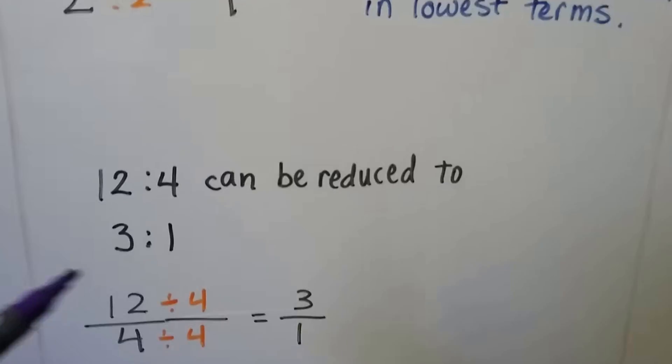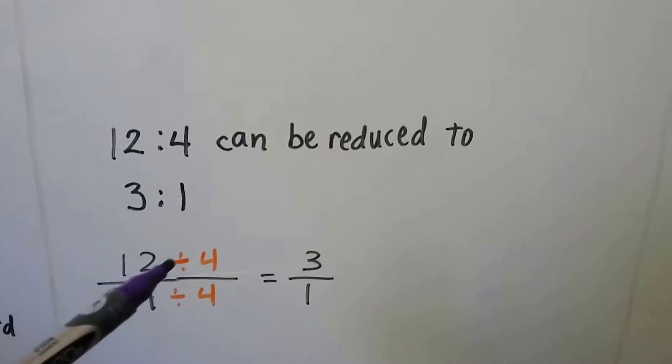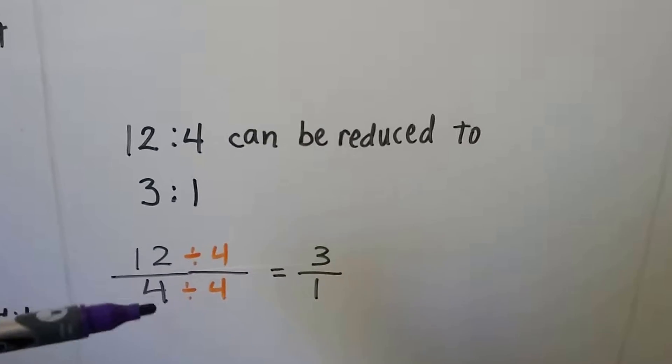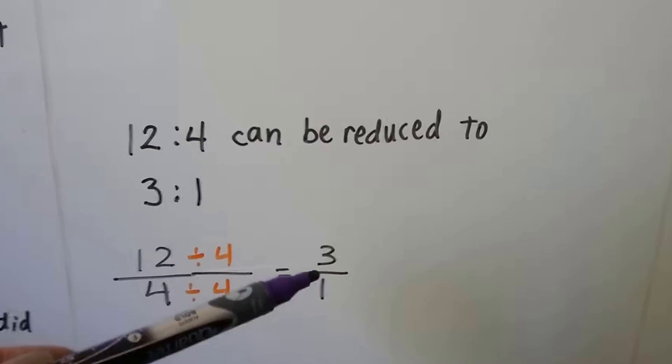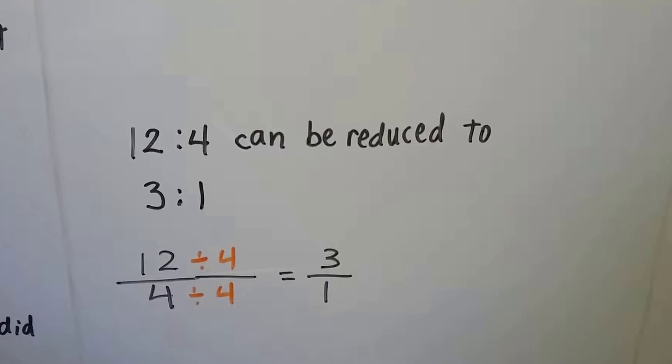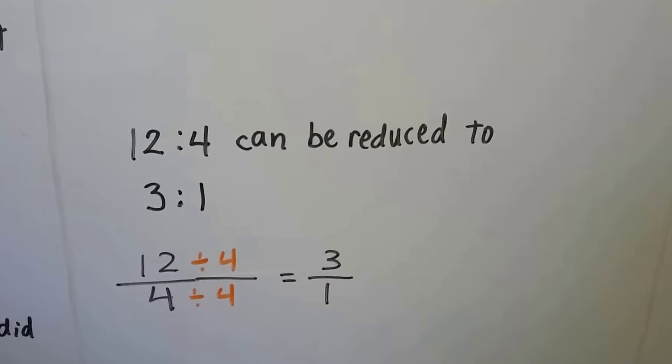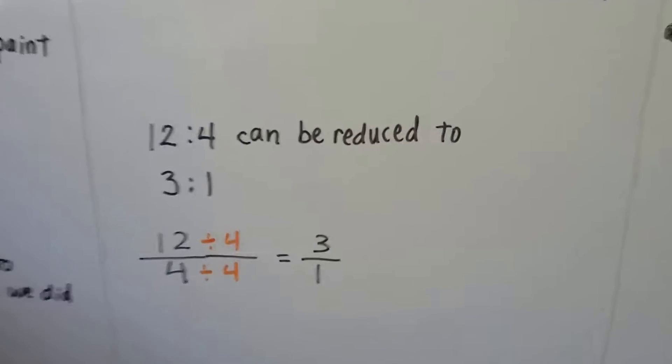If we have 12 to 4, that could be reduced to 3 to 1. We just divide the 12 by 4 and the 4 divided by 4, and we get 3 to 1. But we don't turn that into a mixed number or a whole number.